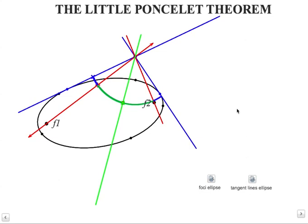Here is a short reminder of the Little Poncelet theorem. You see here an ellipse and from this point the two tangent lines and the lines joining the point to the foci of the ellipse.